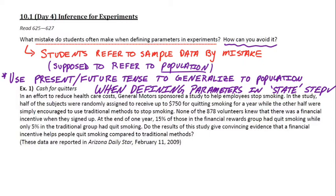If you talk about the volunteers who've already shown side effects, that refers to the sample data. And we're not making inferences about the sample data — we're making inferences about the population.